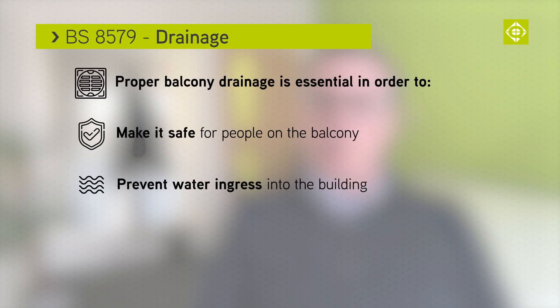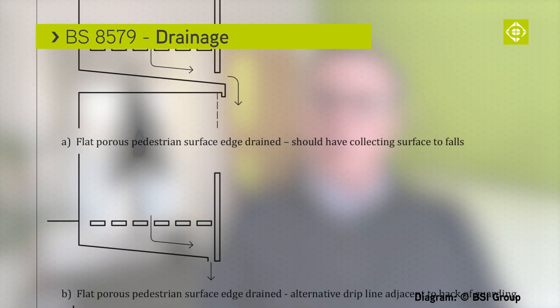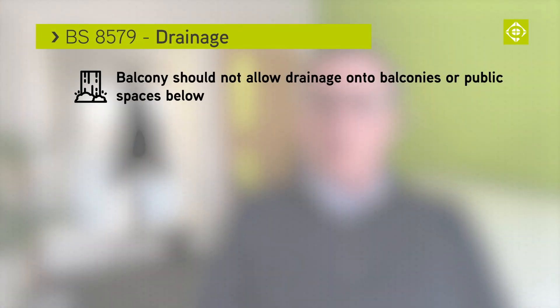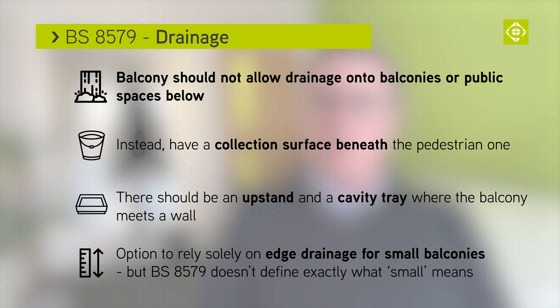Drainage of balconies. Proper drainage is essential to make it safe for people on the balcony, to prevent water ingress into the building, to prevent unsightly staining of the building, and so as not to be a nuisance to people below. Figure 8 provides some generic options, with four of the five examples showing a porous pedestrian surface. Perforated surfaces like these should not allow drainage directly onto balconies or public spaces below and should have a collection surface below the pedestrian one. Where the balcony meets a wall there should be an upstand and a cavity tray. There is also the option of relying solely on edge drainage for small balconies, but the document doesn't define how big a small balcony is. There is also guidance on rainwater catchment areas, including the difference between solid and non-solid guarding at the balcony edge. Detailed drainage options are given in diagrams 8, 9, and 10.